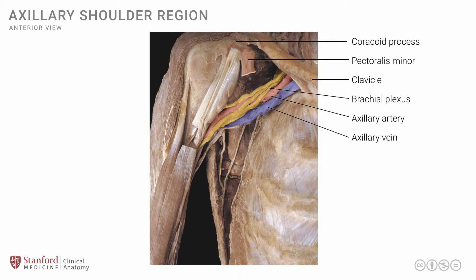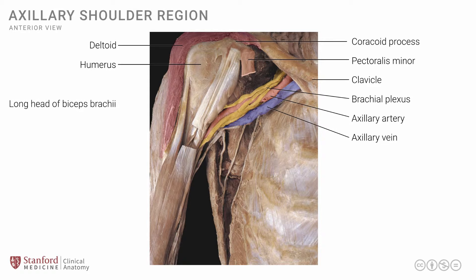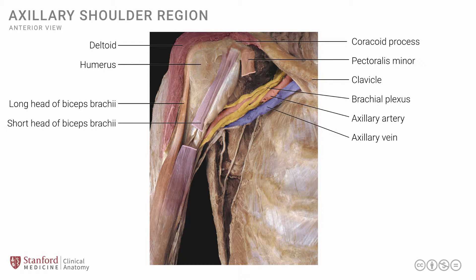If we now focus on the lateral side of this photograph, we can see that the deltoid muscle has been cut away in order to expose some of the deeper structures, highlighted in red here. Because the anterior fibers of the deltoid have been removed, we can see the humerus — the head of the humerus as well as its bony tubercles, the lesser tubercle covered with some capsular fibrous tissue. Very clearly seen is the long head of the biceps brachii, which travels through the intertubercular groove, going distally to join the short head of the biceps. The short head of the biceps also attaches onto the coracoid process and continues on its way into the arm.